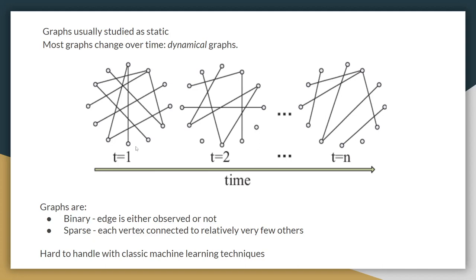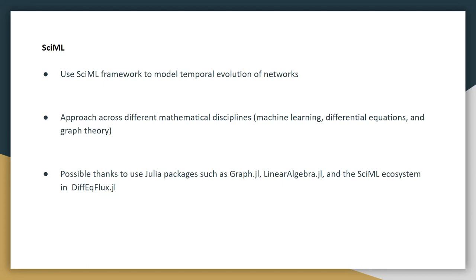For this project we're looking at graphs whose vertex set is fixed and it is the edge set that is changing over time. And so our goal is to predict what the edges might look like at t equals n, having known what they are for t equals 1 and t equals 2 time steps. Now graphs are binary objects, they're sparse and they get complex very quickly. And for that reason they're hard to handle with classic machine learning techniques.